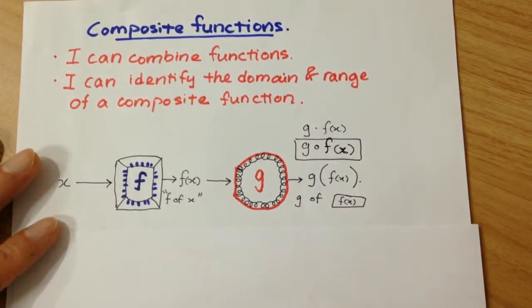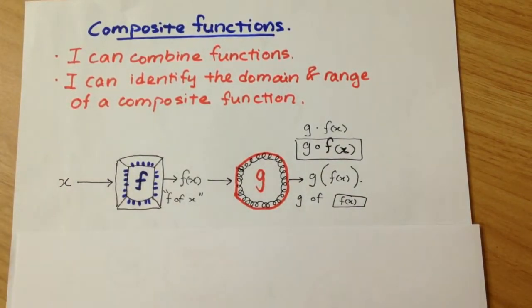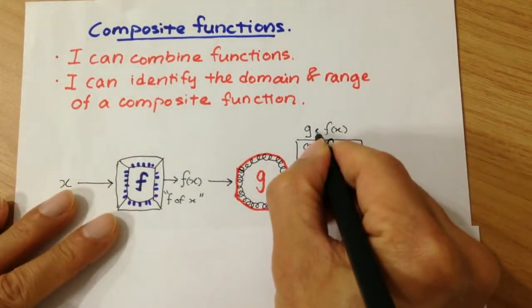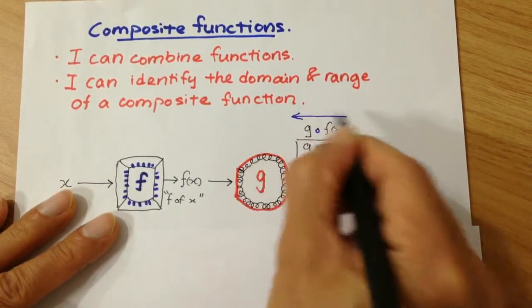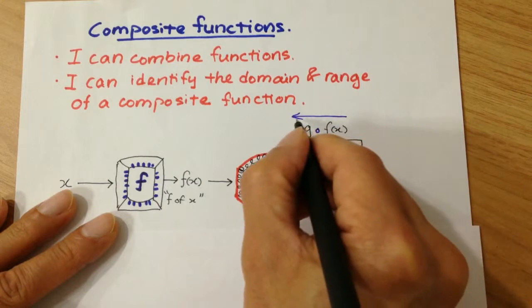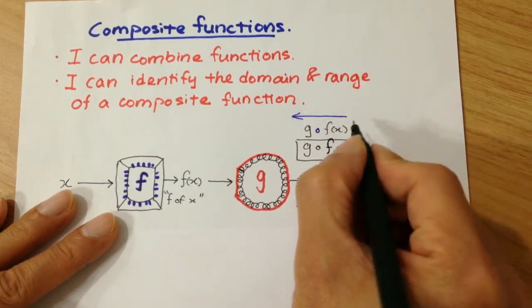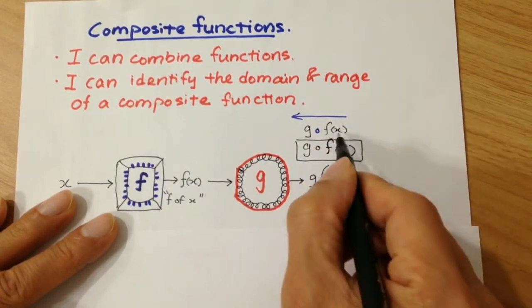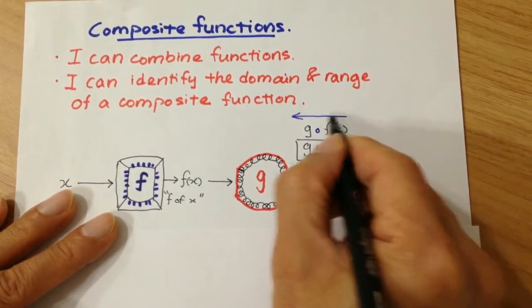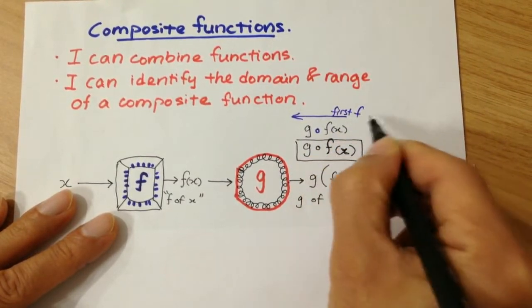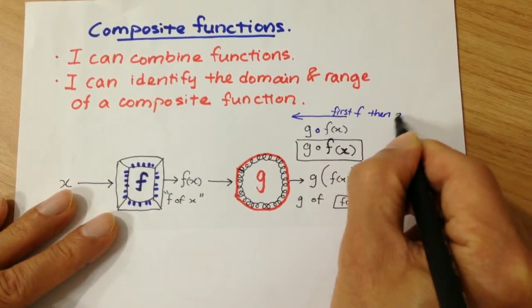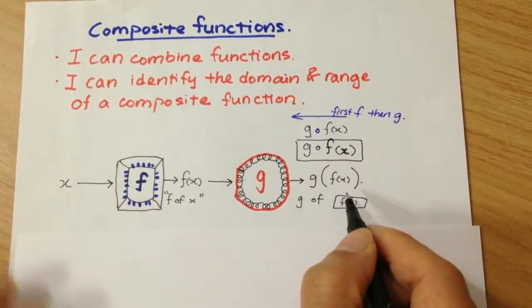And so for composition, the reading direction is from the right to the left, as in Arabic or Hebrew. So your x goes inverse. So this is read as first f, then g. First f, then g.